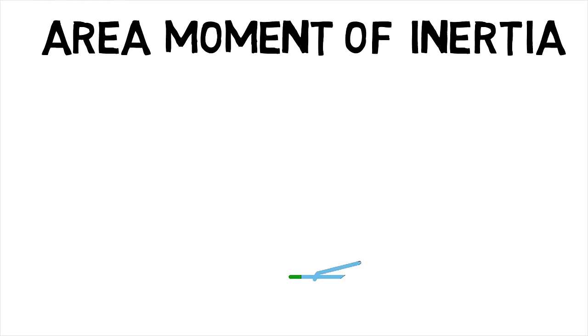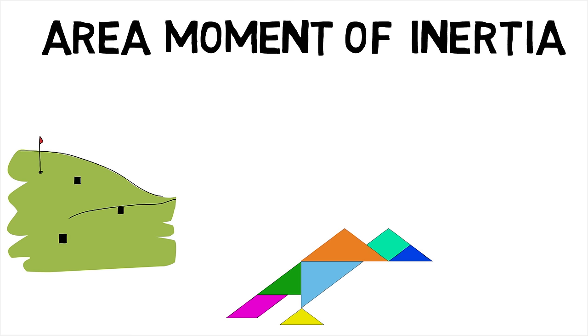The second moment of inertia, also known as the area moment of inertia, is a geometrical property of an area which reflects how its points are distributed with regard to an arbitrary axis.